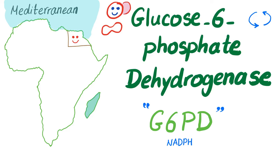Glucose 6-phosphate dehydrogenase, G6PD. G6PD deficiency is the most common enzyme deficiency, so G6PD is a big deal. You cannot understand disease before first understanding what's normal. In this video we'll discuss the enzyme glucose 6-phosphate dehydrogenase. In the next video we will discuss G6PD deficiency, also historically known as Favism.